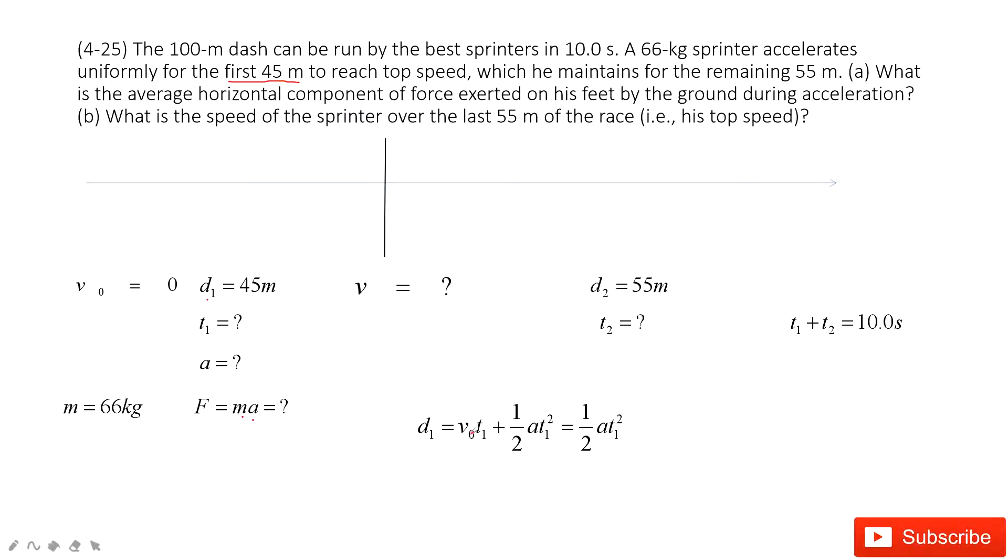In this one, V_0 is 0. So we get, at this part, d_1 is just 1/2*a*T_1 squared. And then we look at part 2.